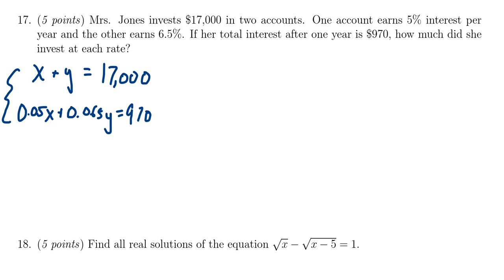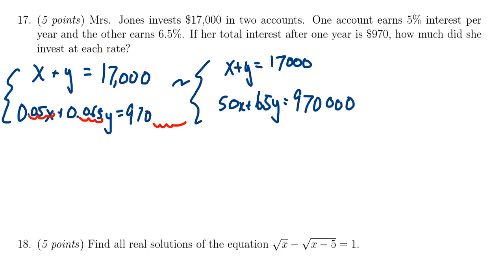The first thing I want to do is actually clean up some numbers. If I move this decimal place over by 3, I can do that to everywhere. So it's basically going to times it by 1,000. So what that does is give me a new second equation. X plus Y equals 17,000, didn't do anything there. And the second equation will end up with 50X plus 65Y equals 970,000.